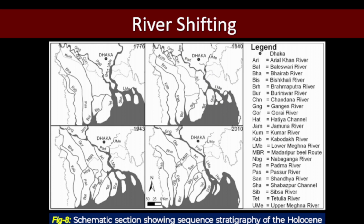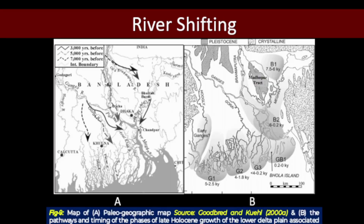Some seismologists believe this change happened due to the 1787 Dacca earthquake, while some sedimentologists believe the change happened over a large-scale avulsion over a long period of time. We can also see the gradual movement of the Ganga from west to east and the Brahmaputra from east to west and the positions of their estuaries in each time period. At present, they merge together and connect with the ocean through the Meghna River, which is the current depocentre.